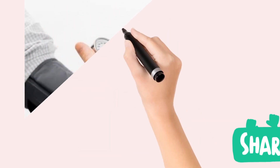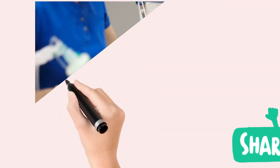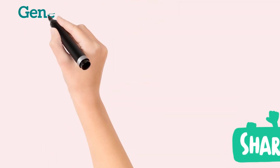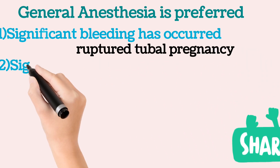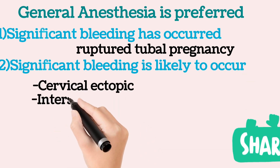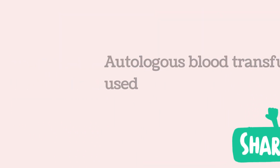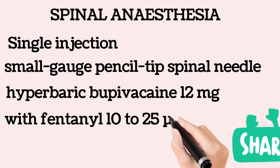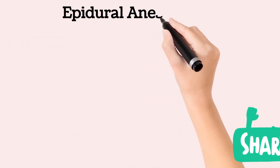A ruptured ectopic pregnancy may be associated with significant preoperative blood loss, but estimation is difficult because young women may maintain normal blood pressure despite marked reduction in circulatory blood volume. General anesthesia with preparation for hemorrhage is preferred if significant blood loss has occurred, as in ruptured tubal pregnancy, or is likely to occur as in cervical, interstitial, cornual, caesarean scar, or abdominal ectopic pregnancies. Intraoperative autologous blood transfusion can be used. Subarachnoid block can be given with a small-gauge pencil-tip spinal needle using hyperbaric bupivacaine 12 mg with fentanyl 10–25 micrograms to achieve T4 sensory level. Epidural anesthesia can also be given.